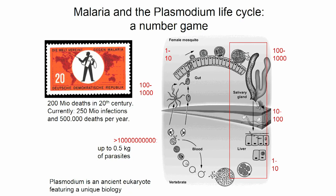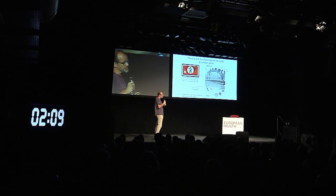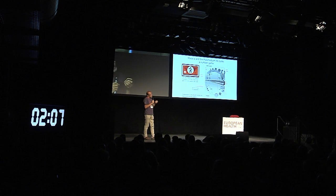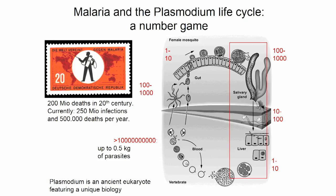It's this stage of the parasite, highlighted on the right side in the red rectangle, that my lab is mostly interested in. In order to study this, we make use of a rodent malaria model system that allows us to very easily transfect parasites and generate transgenic parasite lines.